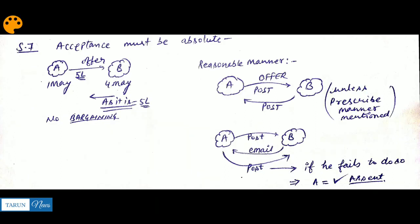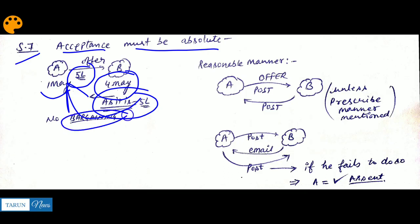Next is our Section 7: Acceptance Must Be Absolute. Let's continue the last example. A sent an offer letter saying 'you can buy my car for 5 lakh rupees'. When it reaches B, and B accepts - as A said 5 lakhs, if B agrees to buy it for 5 lakhs - then it's absolute. There is no condition used, no bargaining.